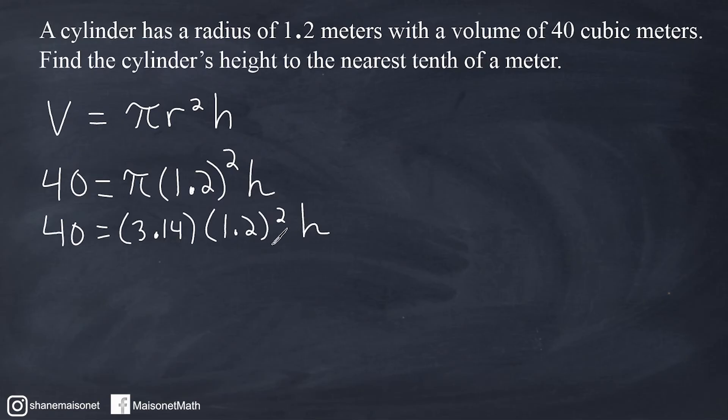The only variable we have remaining in this equation is h, so now we can isolate this variable to figure out what it equals. The first thing we have to do is take 1.2 and raise it to the second power. 1.2 times 1.2 is 1.44. So I'm going to write this as 40 = 3.14 times 1.44h.